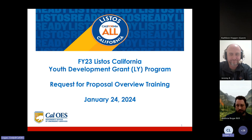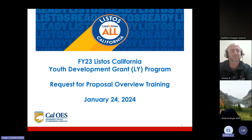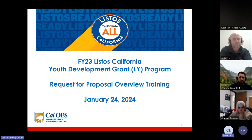The presentation is being recorded and will be available for on-demand viewing later. Anyone who has joined should be on listen mode. This training is an overview of the Request for Proposal and forms only. We are unable to assist applicants with the actual preparation of their proposals. All questions concerning the RFP, the process, or programmatic issues must be submitted in writing by email to listosgrants@caloes.ca.gov. We can only respond to technical questions about the RFP during the time between the publication date and the completion of the RFP process.